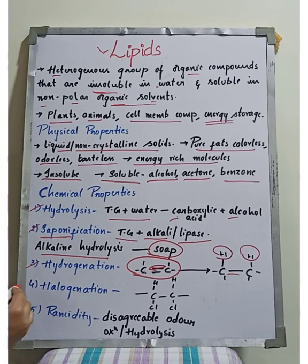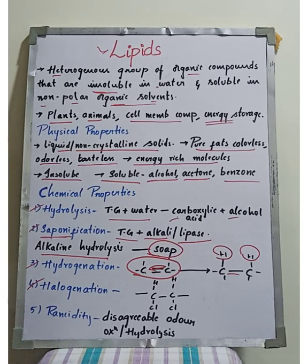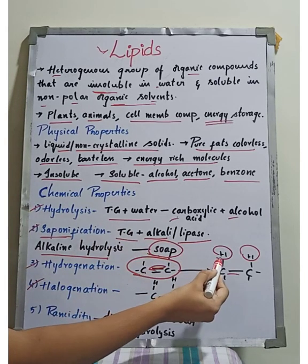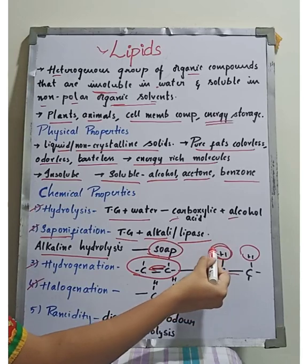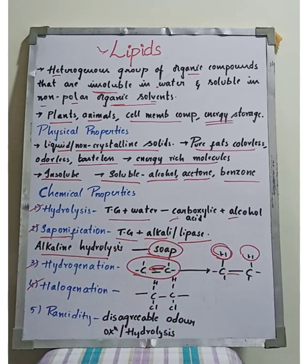The fourth chemical property is halogenation. Halogenation is the addition of a halogen — in this case, chloride — to fatty acids. In this reaction, we start with unsaturated fatty acids and add the halogen across the double bond.